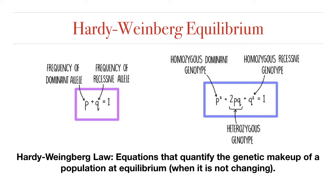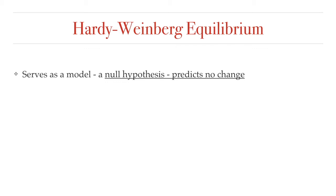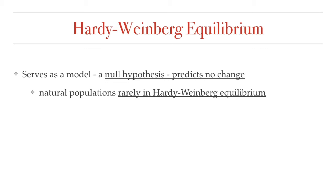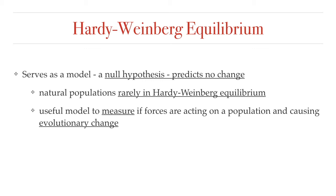A population is said to be in Hardy-Weinberg equilibrium if the allele frequencies remain constant throughout successive generations. We tend to use the Hardy-Weinberg equations as a model of what allele frequencies look like when the population is not evolving — kind of like a null hypothesis. It's important to understand that very rarely are natural populations ever in Hardy-Weinberg equilibrium, but these equations are useful for detecting if forces are acting on a population causing evolutionary change.